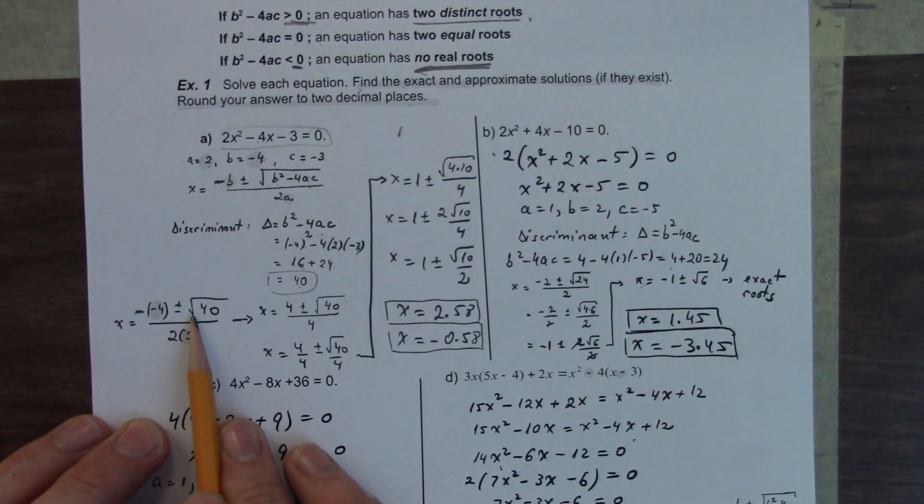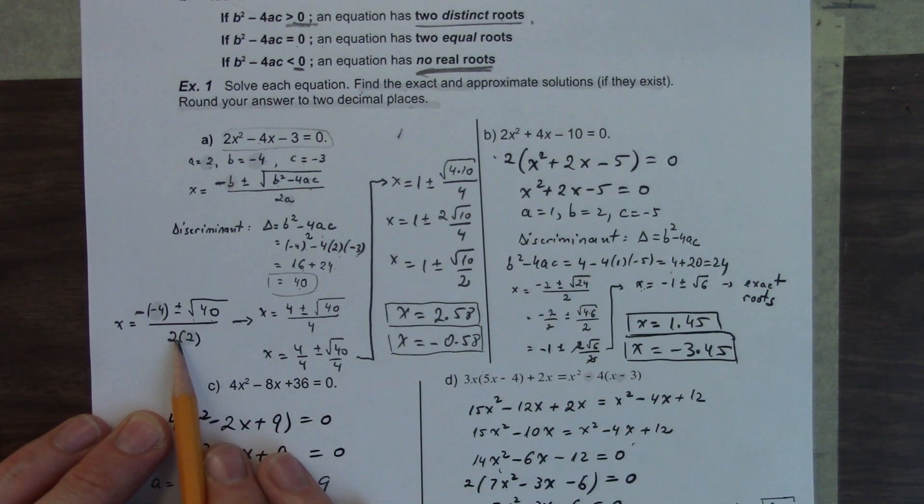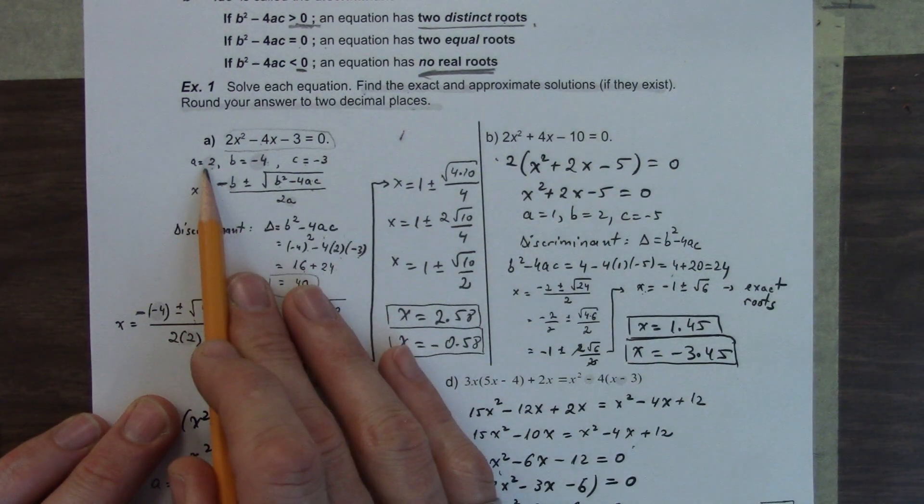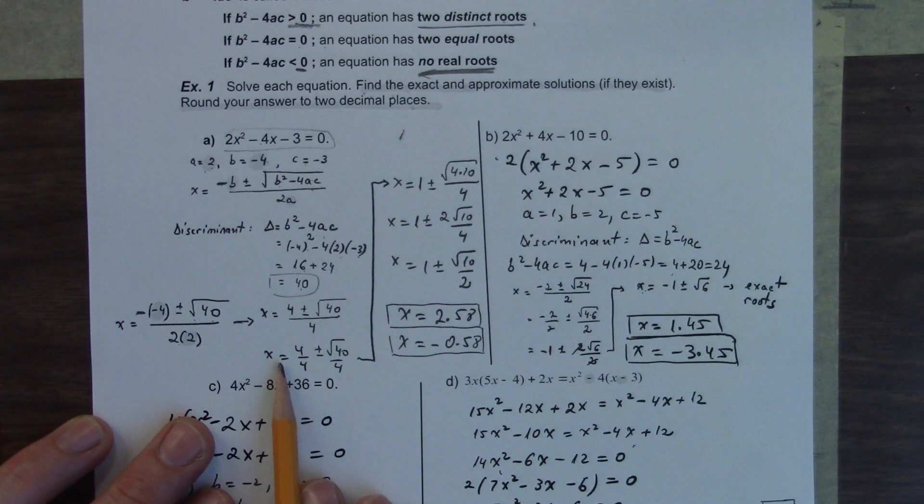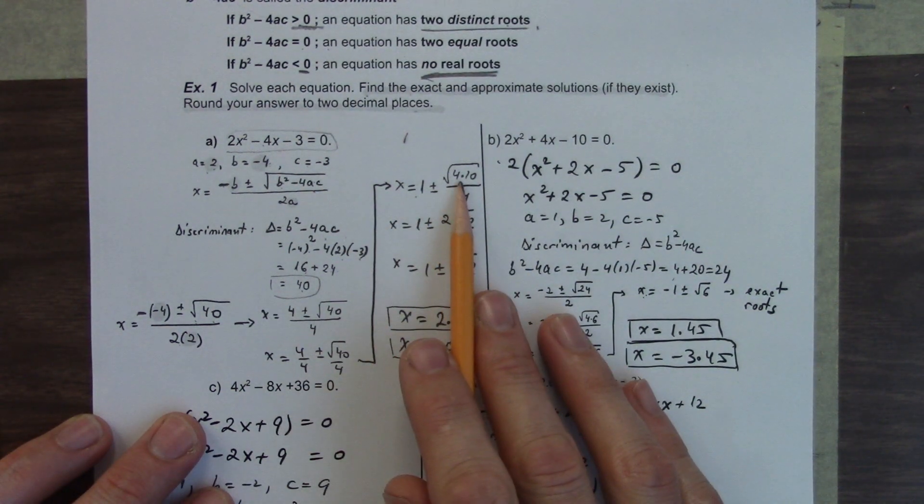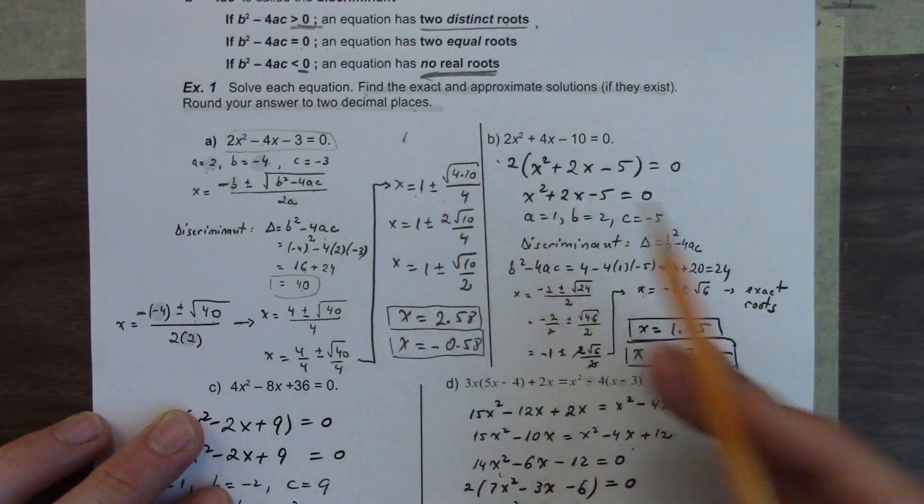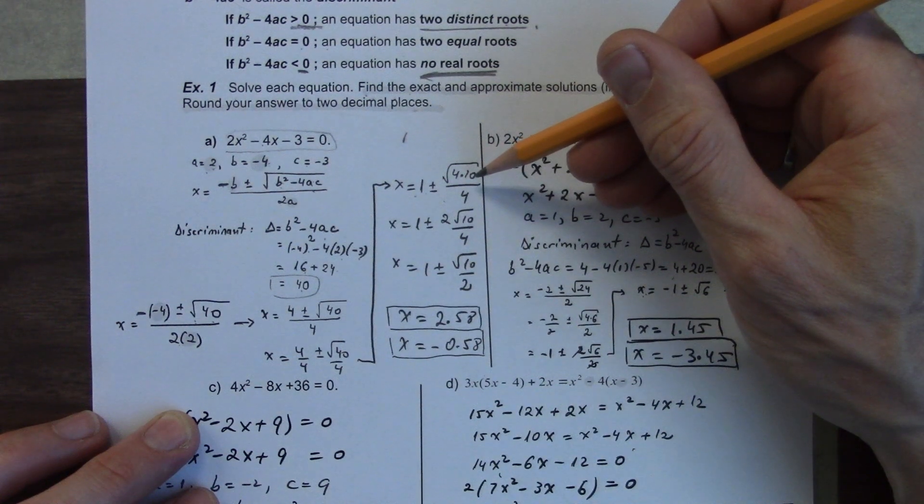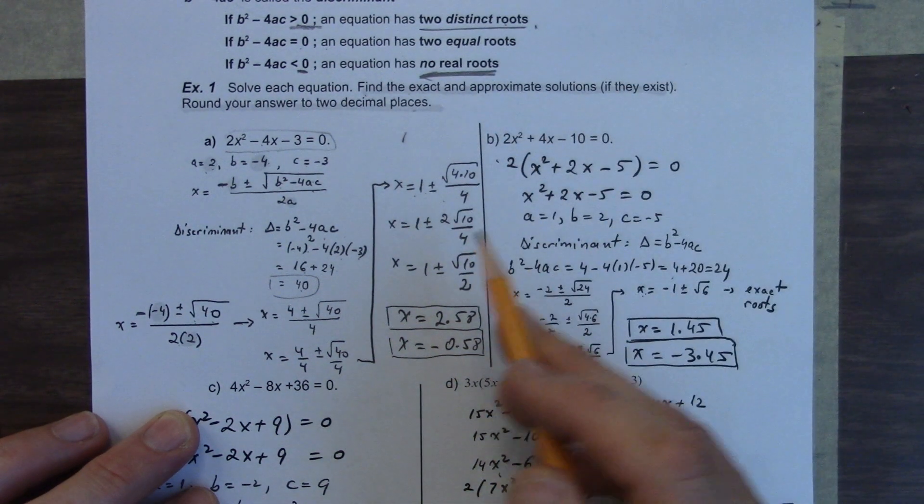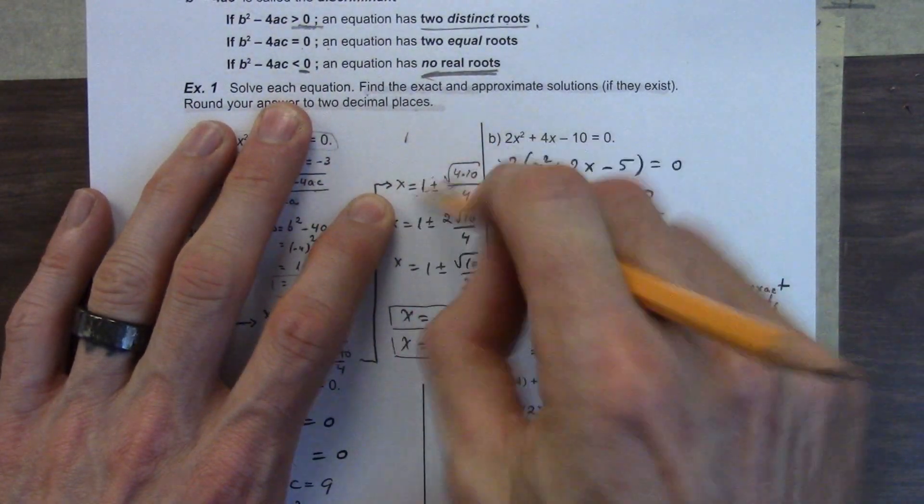So our discriminant is greater than 0, so we know we have two distinct roots. We take that discriminant, we plug it back into the formula here. So it goes under the root sign. We get negative negative 4 plus or minus root 40 over 2 times a. a in this case is 2. We get x equals 4 plus or minus root of 40 over 4.